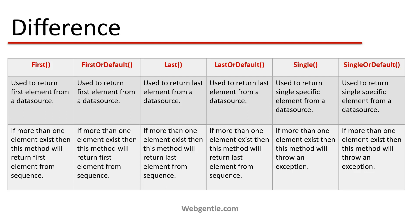Right now we do not have any difference between First and FirstOrDefault, Last and LastOrDefault, Single and SingleOrDefault. Now let's understand the difference in the second line. If more than one element exists, the First method will return the first element from the sequence. Similarly, FirstOrDefault will also return the first element. If you are using the Last method and there are more than one elements, it will always return the last element.